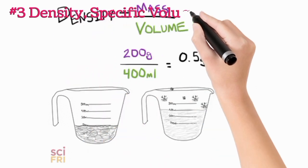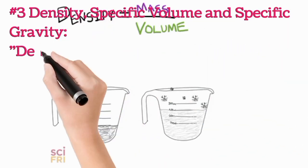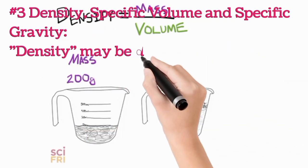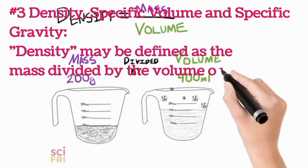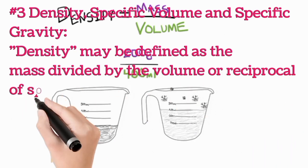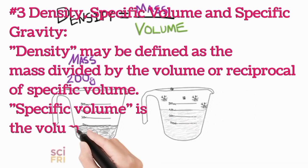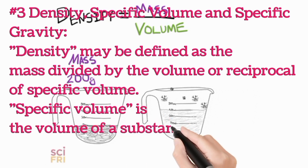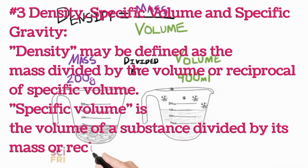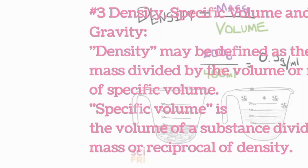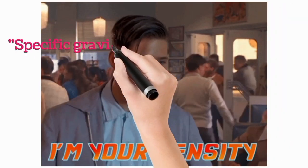Density may be defined as the mass divided by the volume, or the reciprocal of specific volume. Specific volume is the volume of a substance divided by its mass, or the reciprocal of density. Specific gravity is the ratio of the density of any substance to the density of water, which is known as the standard density.